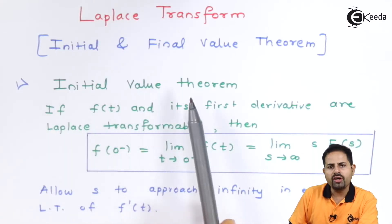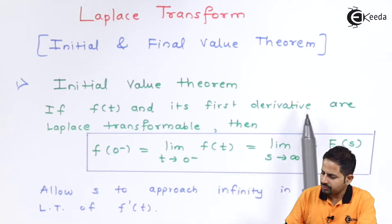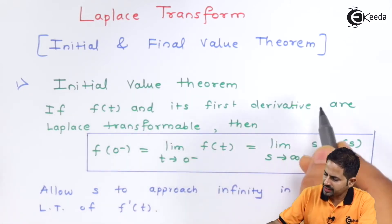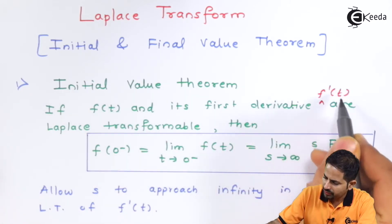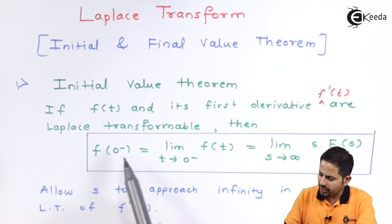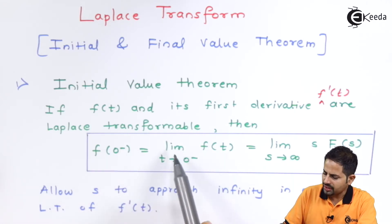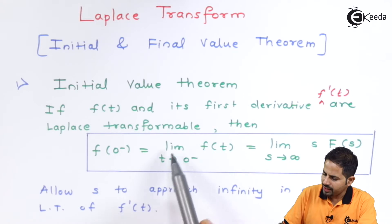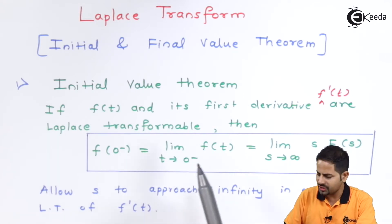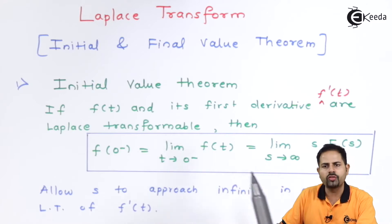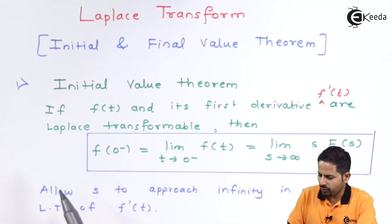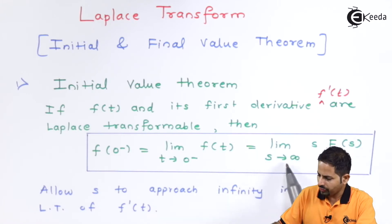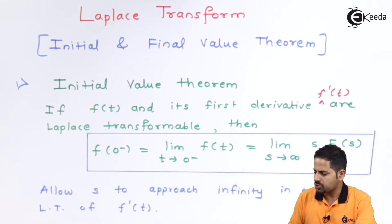The condition for the Initial Value Theorem is that f(t) and its first derivative, f'(t), should be Laplace transformable. The Initial Value Theorem states that f(0-) — the initial value of a function, which is the limit as t tends to 0- of f(t) — is equal to the limit as s tends to infinity of s·F(s). So we need an expression where s tends to infinity.